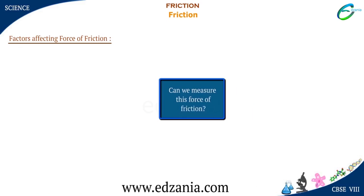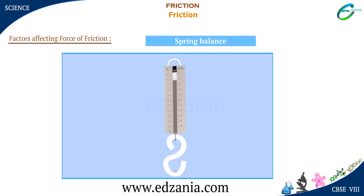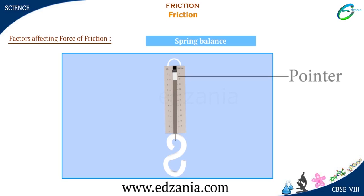Can we measure this force of friction? Yes, we can measure it with the help of a spring balance. When an object is hung on its hook, the hook is pulled by applying a force on it. Then the spring stretches and the pointer moves over the graduated scale. The position of the pointer indicates the force acting on the object connected to the hook.